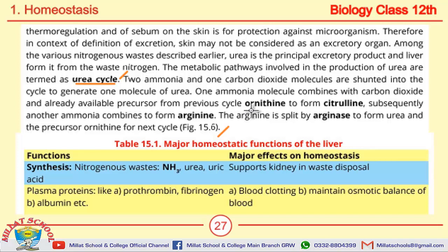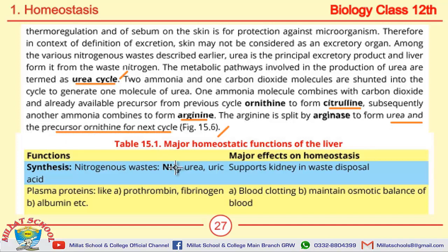In the urea cycle, ornithine combines with carbon dioxide and ammonia to form citrulline. Citrulline then combines with another ammonia molecule to make arginine. Arginine is then broken down by the enzyme arginase to produce urea and ornithine, which serves as the precursor for the next cycle. This was a brief description of the urea cycle.